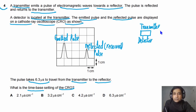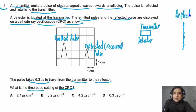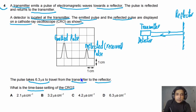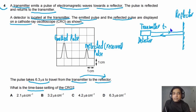As we transmit electromagnetic waves from here, they travel to the reflector, and after reflection, they return to the detector. The time given is from transmitter to reflector, which equals 6.3 microseconds. But we need to understand the total time from transmitter to detector — the return journey also takes 6.3 microseconds.